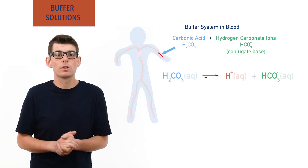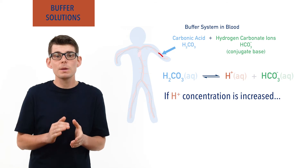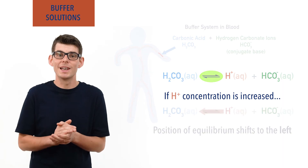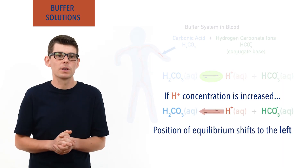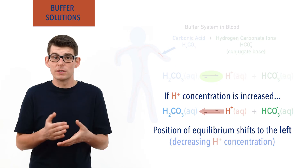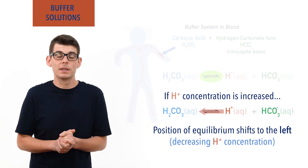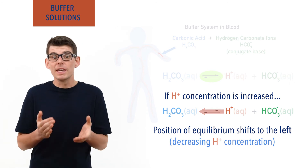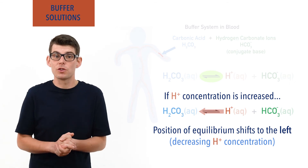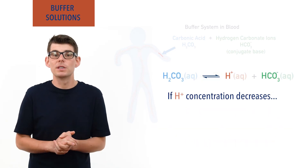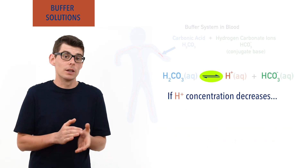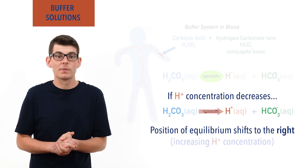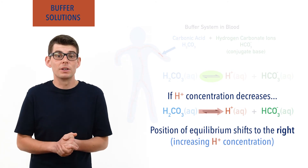If H⁺ ion concentration increases in the blood, the equilibrium position between carbonic acid and hydrogen carbonate ions shifts to the left, and the extra H⁺ ions are removed from the blood. This minimizes any decrease in pH as the H⁺ ion concentration is kept nearly constant. Equally, if H⁺ ion concentration decreases in the blood, the equilibrium shifts to the right, increasing the H⁺ ion concentration. This minimizes any increase in pH.